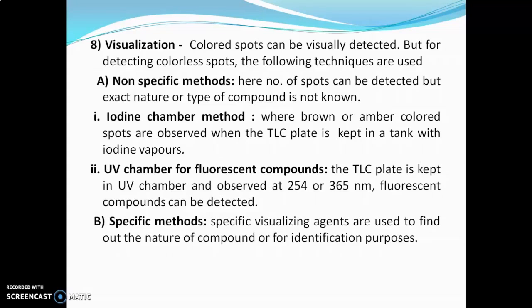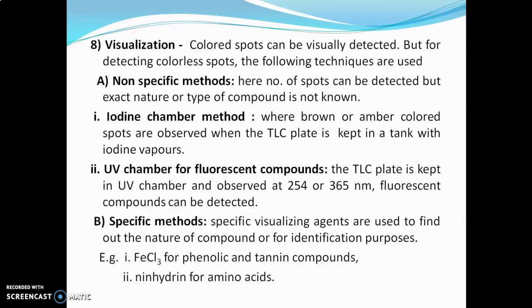In the specific method, a specific physiological reagent is used to detect the compound, allowing us to know the nature of the compound and helping in its identification. For example, ferric chloride is used to identify phenolic and tannin compounds, while ninhydrin is used for detection of amino acids.